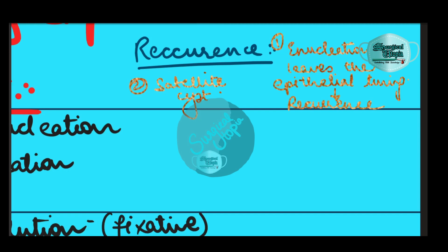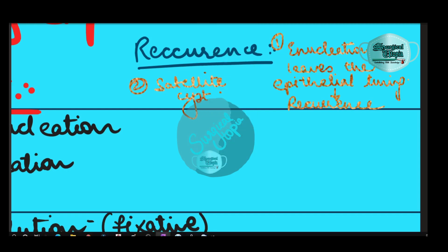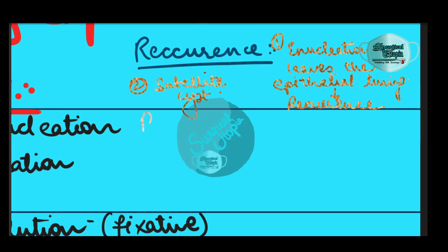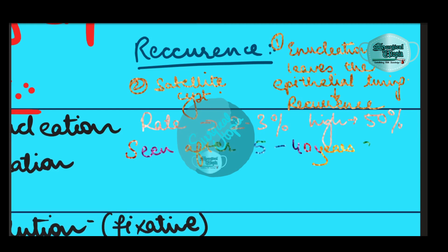Another reason for recurrence is the presence of satellite cells or satellite cysts. The rate of recurrence is around 2–3% and can be as high as 50%. Recurrence can be seen as early as five years and as late as 40 years after removal of the cyst.